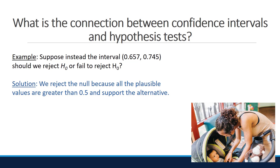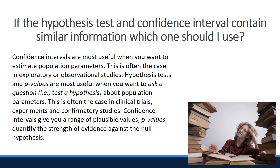When we determine the outcome of a hypothesis test based on a confidence interval, we do not compute a p-value, but we do need to discuss the significance level. Located in the notes are different ways to determine the significance level of a test determined by a confidence interval. Confidence intervals are most useful when you want to estimate population parameters — often the case in exploratory or observational studies. Hypothesis tests and p-values are most useful when you want to ask a question about a population parameter — often the case in clinical trials, experiments, and confirmatory studies. Confidence intervals give you a range of plausible values, while p-values quantify the strength of evidence against the null.